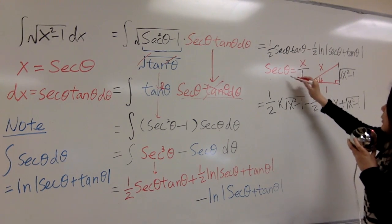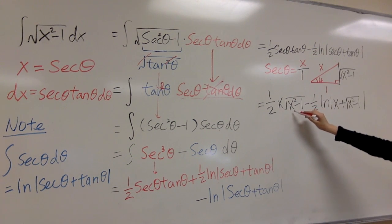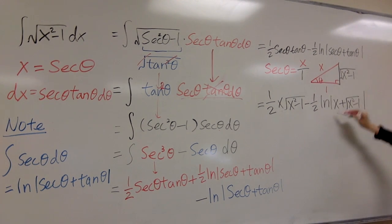Secant theta is what we set as x, and tangent theta is square root of x squared minus 1. Here, that's the same. You put secant in, tangent in, and that's the answer.